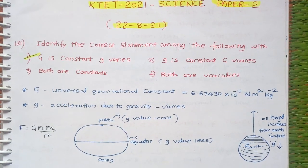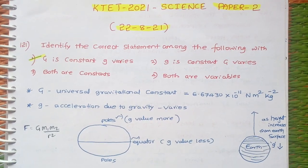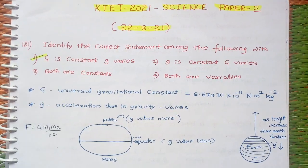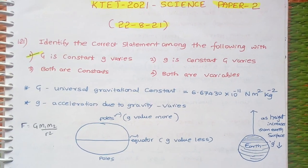First we see: identify the correct statement among the following. First option: G is constant, g varies. Second: both are constant. Third: both are variables.